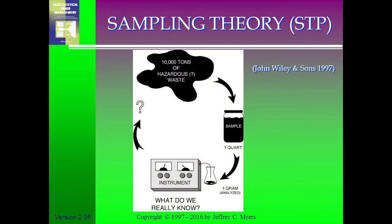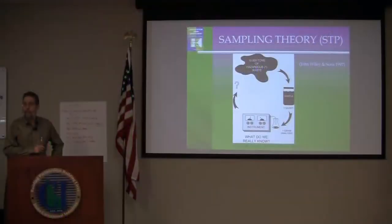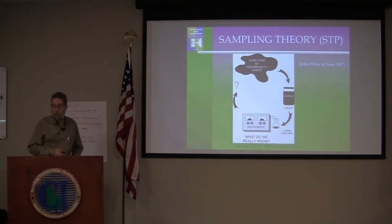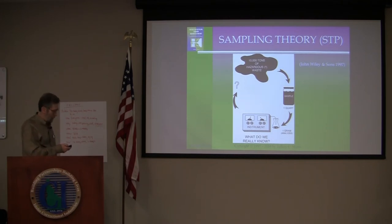Miners have huge volumes of ore to characterize, but sometimes we have huge volumes of hazardous waste — 10,000, 50,000, even 500 tons. We go out and collect a little bit of a sample, a quart jar, maybe less. Then we send a gram or a few grams to the analytical instrument and get an answer. What do we really know? Because we can have nuggets of explosives, nuggets of PCBs, nuggets of lead, and all sorts of things. We worry about these things.